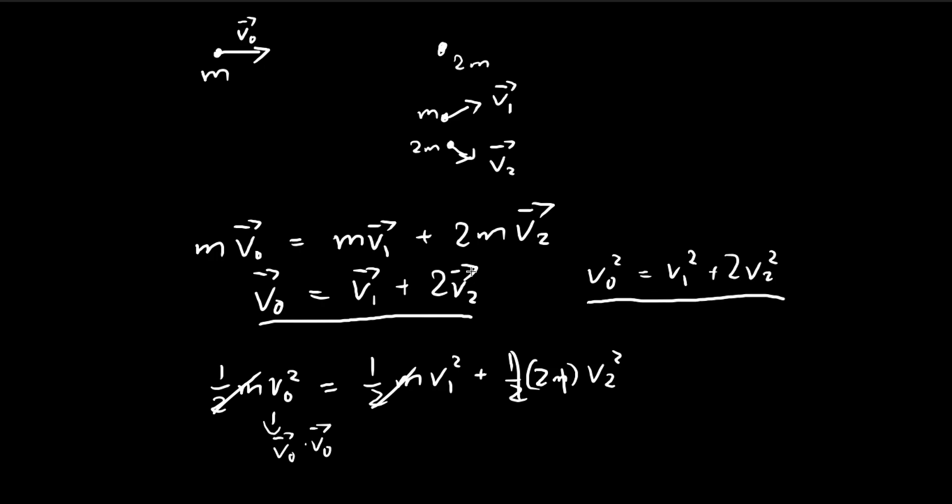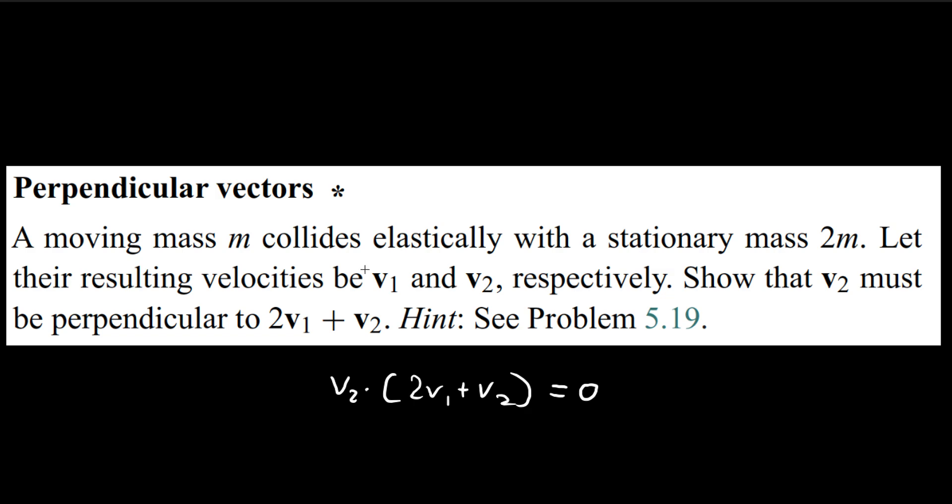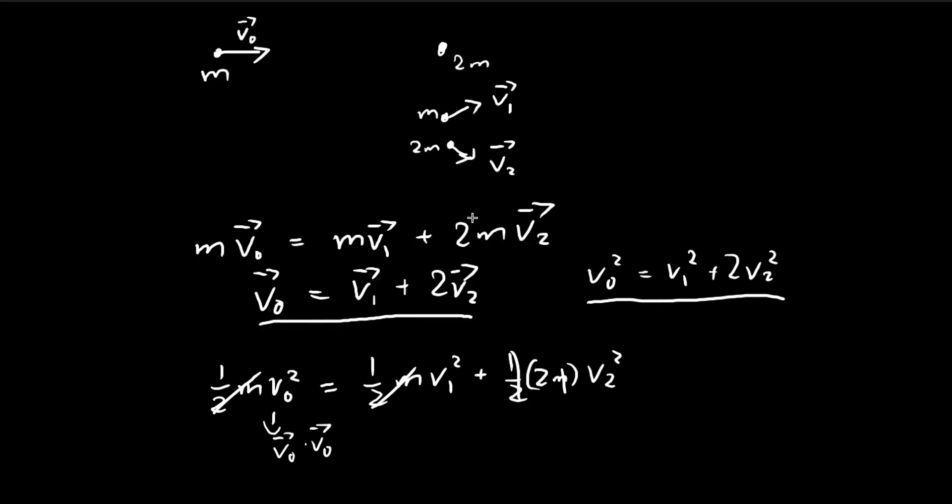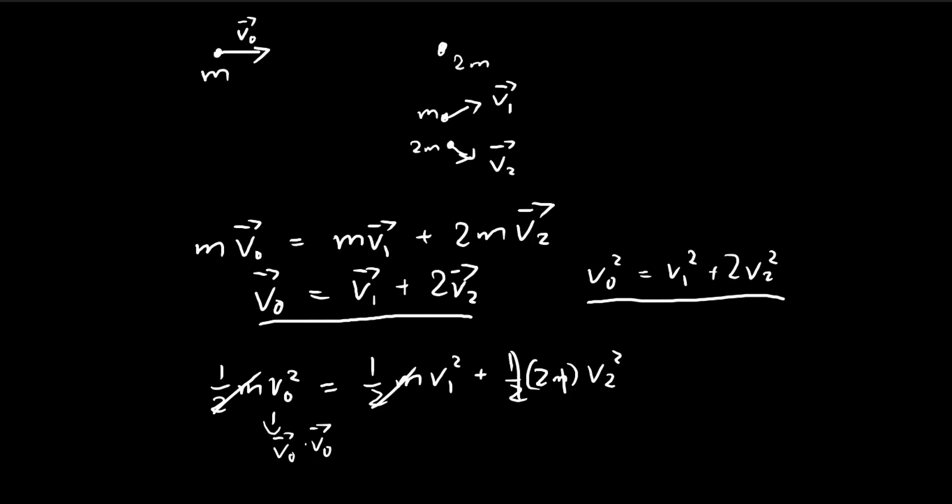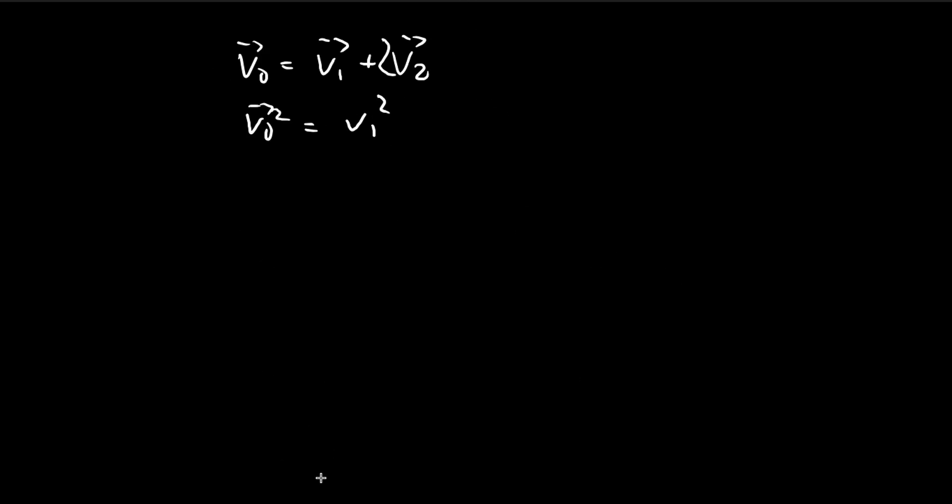We have these two relationships here. Let's try to combine them and take away v0, because in our original problem, the initial velocity v0 does not feature in the problem. So let's try to get rid of v0 first. Let's copy down what we know at this point. We know v0 equals v1 plus 2v2 is true, and we also know v0 squared equals v1 squared plus 2v2 squared is true.